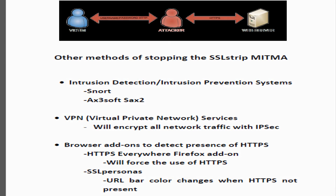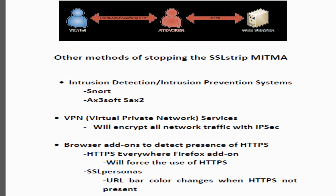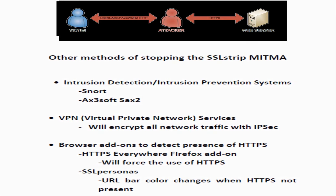There are a few more methods that can be used to stop SSLstrip and this type of man-in-the-middle attack. Intrusion detection and intrusion prevention systems can be deployed on the network. The user can use virtual private network services to encrypt all traffic. And the user can use browser add-ons to detect and alert to the presence of HTTPS. These are beyond the scope of this video and will be explained in future videos.